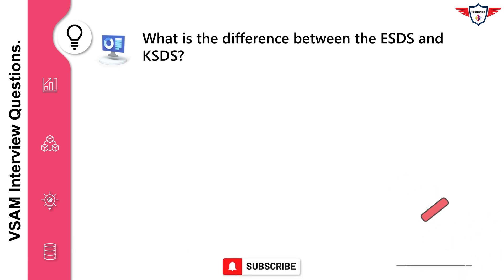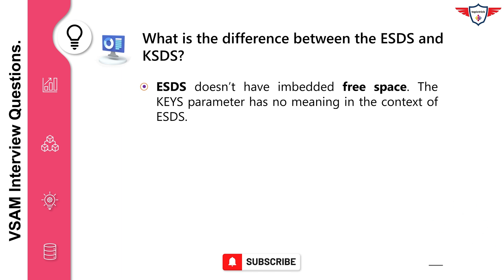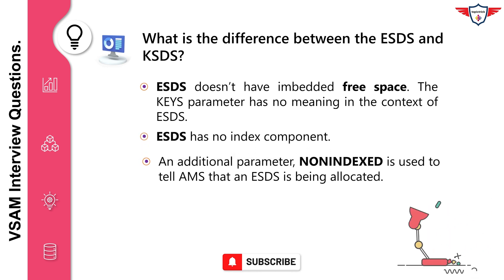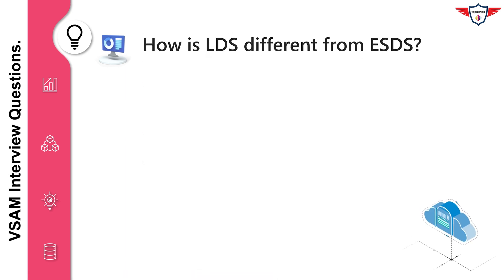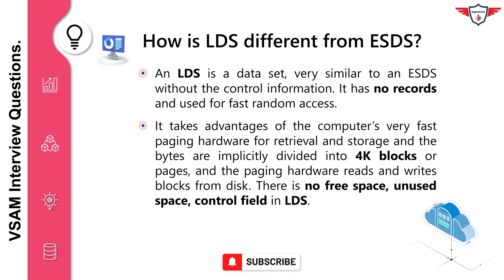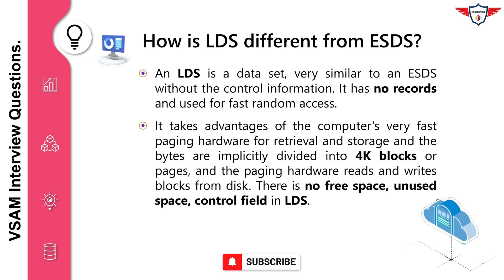What is the difference between ESDS and KSDS? ESDS doesn't have embedded free space. The keys parameter has no meaning in the context of ESDS. ESDS has no index component. An additional parameter, non-indexed, is used to tell AMS that an ESDS is being allocated. How is LDS different from ESDS? An LDS is a dataset very similar to an ESDS without the control information. It has no records and is used for fast random access. It takes advantage of the computer's very fast paging hardware for retrieval and storage. The bytes are implicitly divided into 4K blocks or pages, and the paging hardware reads and writes blocks from disk. There is no free space and no used-space control field in LDS.